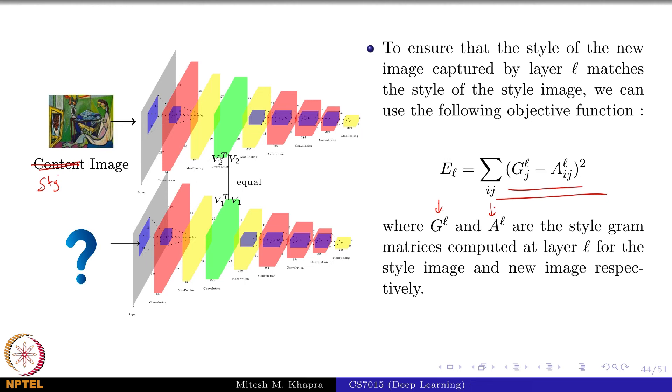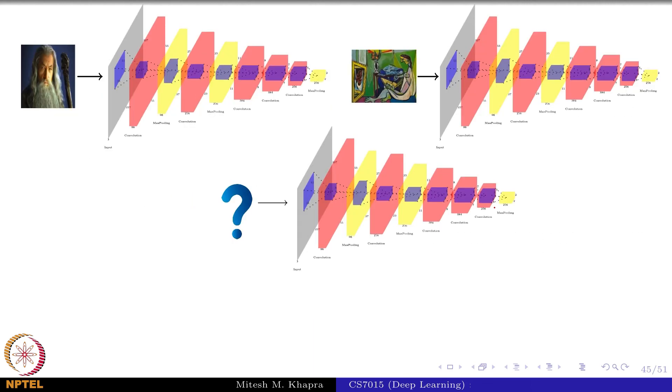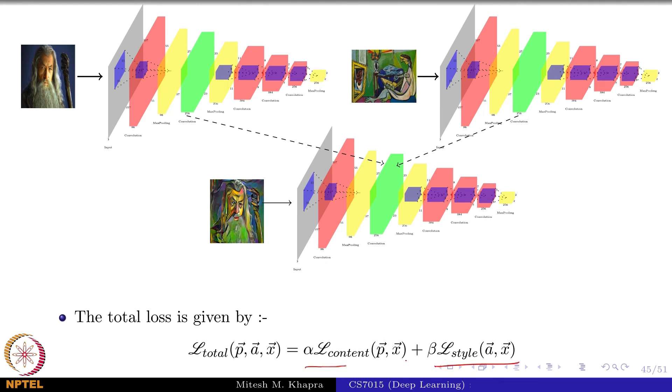So I want the content to match and the style to match. What is my total objective function? Sum of these. I want the content to match and I also want the style to match. I will use an objective function which tries to balance between these two, and alpha and beta are hyperparameters. If you do this and train the algorithm and modify the pixels along with some other tricks, you will get this Gandalf rendered in this style. Some code is available - you can try it out. It's a very interesting idea that you could take these two things and be imaginative. You could do all sorts of things with two different images, how you want to combine them. That is the basic key idea here.